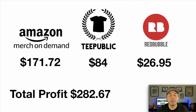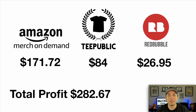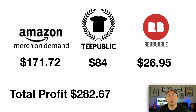Here's the total profit I've made so far this year with the Design with Detour designs: Amazon, a total of $171.72; TPublic, a total of $84; Redbubble, a total of $26.95 — for a total profit of $282.67.